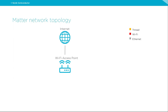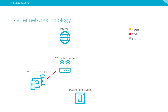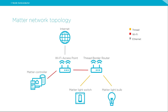To start building a Matter network in our home, we need to have a Wi-Fi access point connected to the internet. The first element supporting Matter is a Matter controller connected to the Wi-Fi network — typically a smartphone, hub, or tablet used to control smart home accessories. The first accessory we are adding is a Matter light switch, but this device uses Thread technology instead of Wi-Fi, so it cannot directly communicate with other Matter devices in the network.